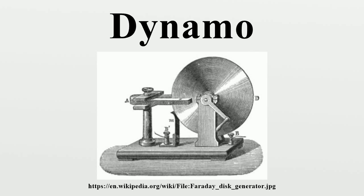The first dynamo based on Faraday's principles was built in 1832 by Hippolyte Pixii, a French instrument maker. It used a permanent magnet rotated by a crank, positioned so that its north and south poles passed by a piece of iron wrapped with insulated wire. The spinning magnet produced a pulse of current each time a pole passed the coil, but the north and south poles induced currents in opposite directions. To convert this to DC, Pixii invented a commutator — a split metal cylinder on the shaft with two springy metal contacts. However, the output consisted of spikes of current separated by none at all, resulting in a low average power output.